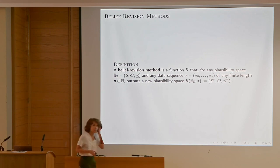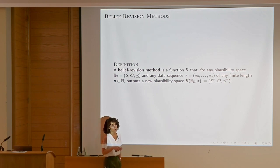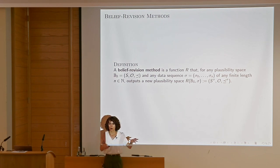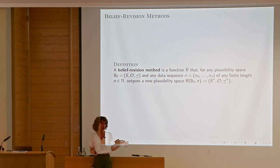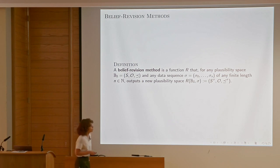In this framework, what is a belief revision method? We have a belief state, we get new information, we revise our belief state. A belief revision method is a function that for any plausibility space and any finite data sequence outputs a new plausibility space. It's not like a learning method that outputs a proposition — this is constructive: give me an element and I'll produce a new plausibility space, like an engine inside the learning method.